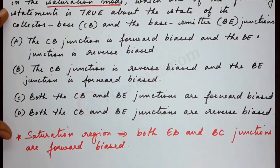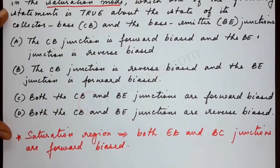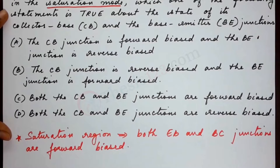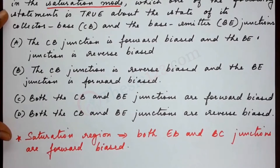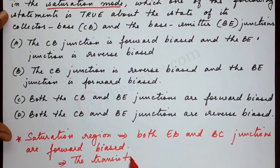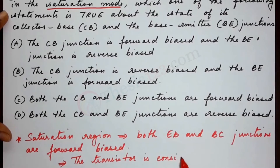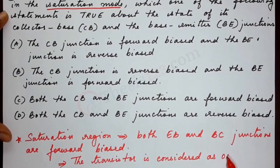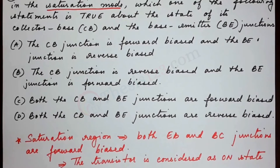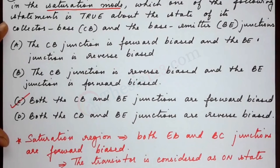In this region, high currents flow through the transistor since both junctions are forward biased. The transistor is considered to be in the on state in digital logic. Based on this, we see that both the CB and BE junctions are forward biased, so the right option here is C.